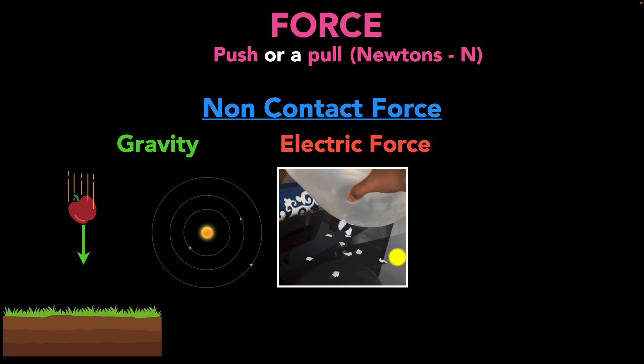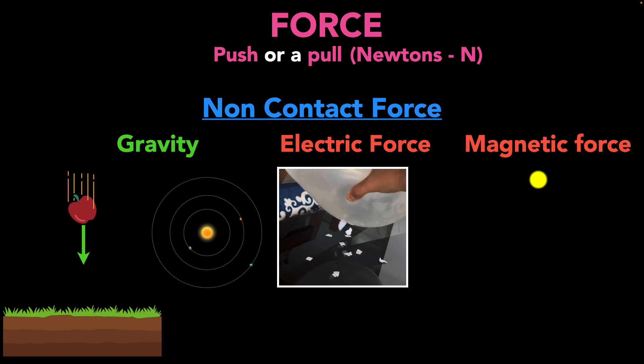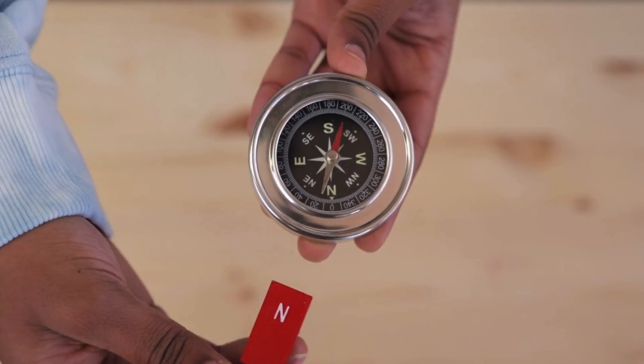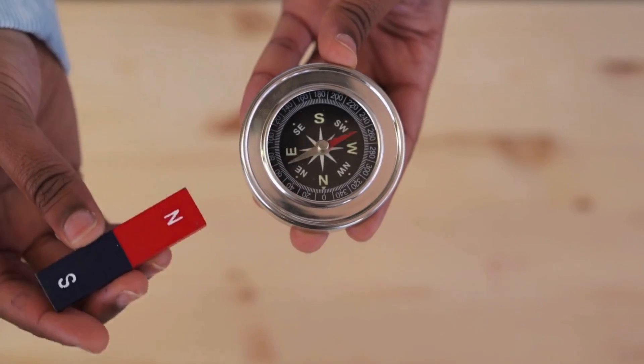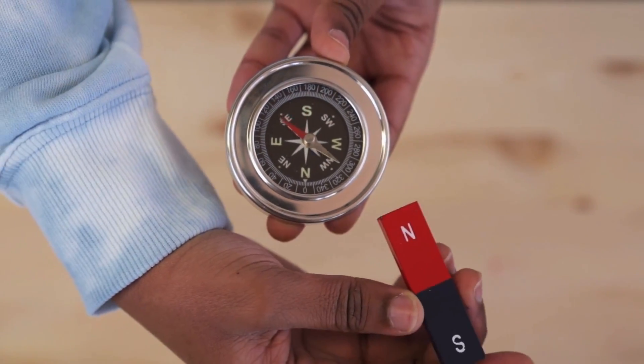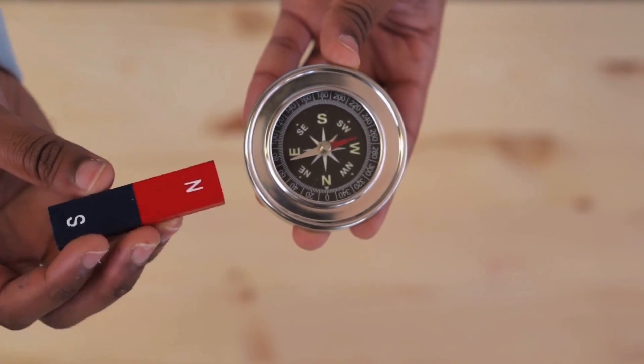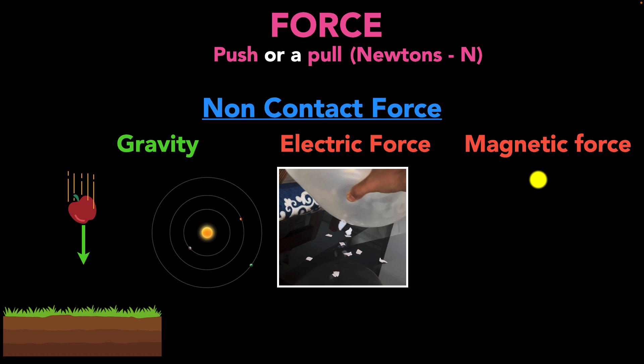And another non-contact force is the magnetic force. If you take a compass and you bring a bar magnet close to it, the bar magnet can exert a force on this compass without being in contact with it. So magnetic force is also an example of a non-contact force.